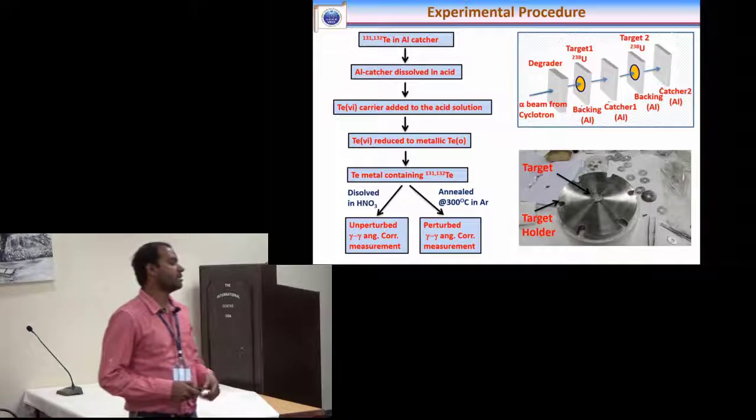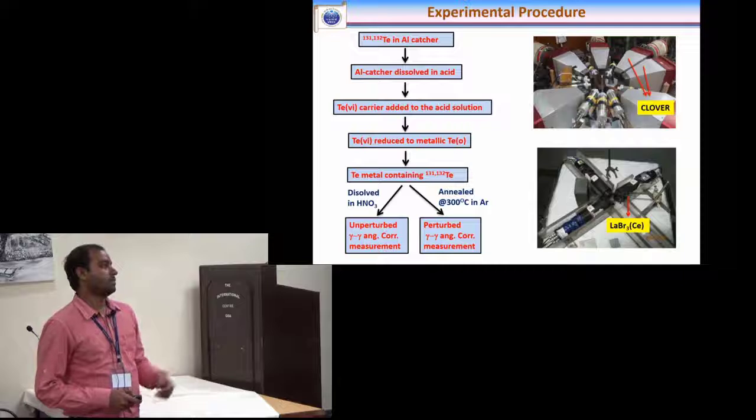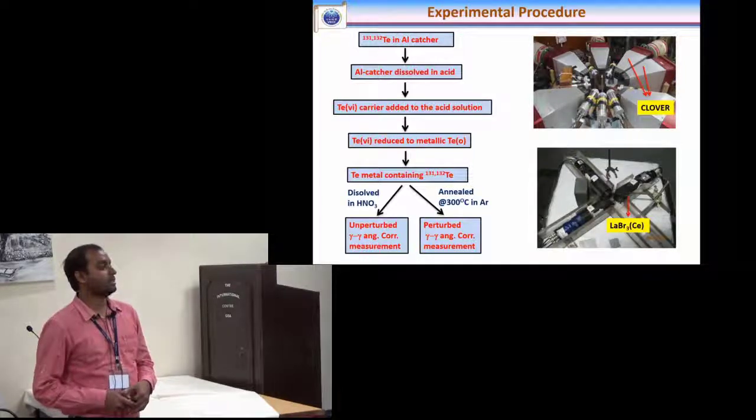The tellurium metal matrix contains the active tellurium isotopes and from the beta decay we explored the excited states of the iodine isotopes. We have two setups, one consists of several clover detectors and another in very close configuration lanthanum bromide detectors.